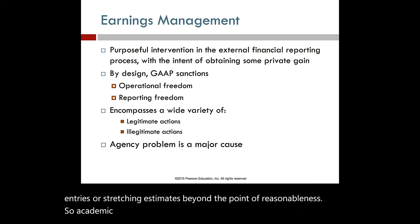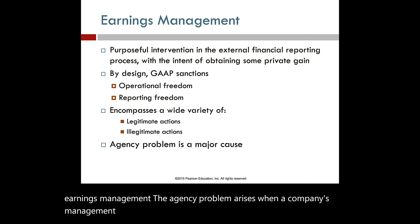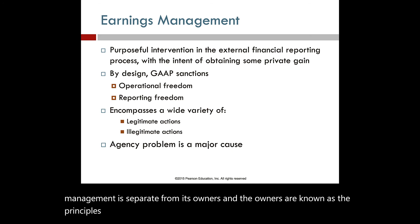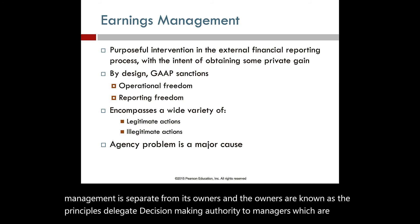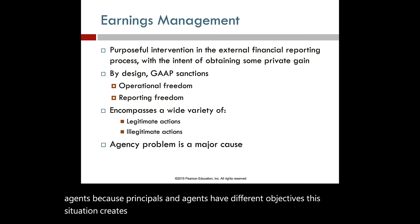Academic research highlights the agency problem as a root cause of earnings management. The agency problem arises when a company's management is separate from its owners. The owners, known as the principals, delegate decision-making authority to managers, who are the agents. Because principals and agents have different objectives, this situation creates the potential for a conflict of interest.